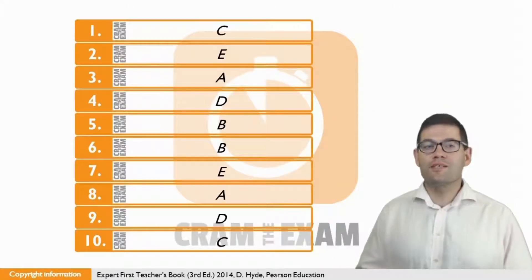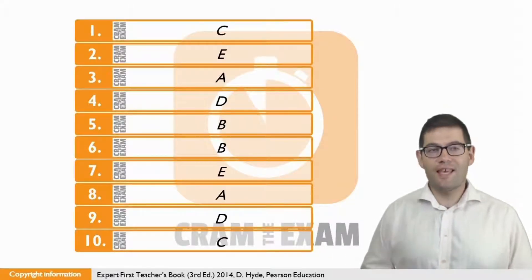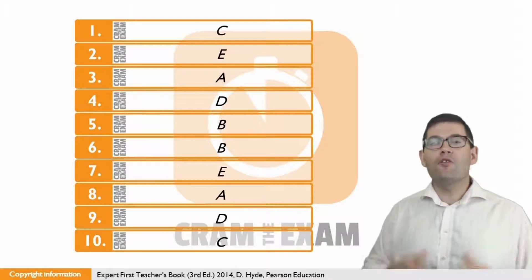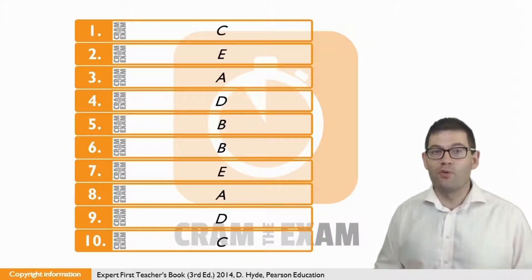For question one, the answer is C. Jeanette admires the efforts made to raise funds for charity, as 'admire the efforts' directly refers to the beginning of C: 'I really applaud those people,' and charity refers to good causes.